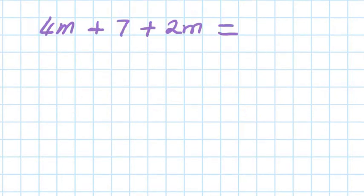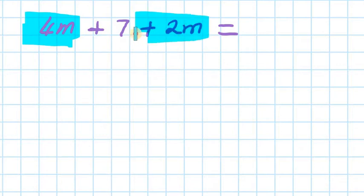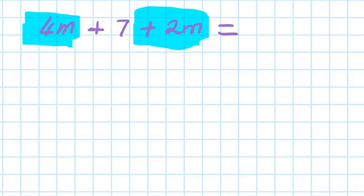All right, now let's add one more term. What we need to do is look for the like term first before we do anything. So you can see 4m plus 7 plus 2m — the m is the like term. So 4m and 2m is 6m. And then the 7 — we can't do anything because there's no like term there, so I just write plus 7. That's all it is.